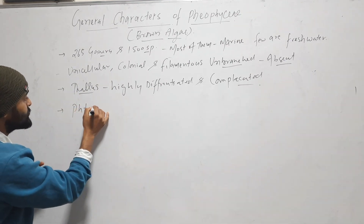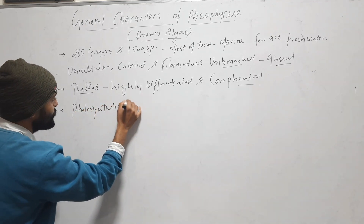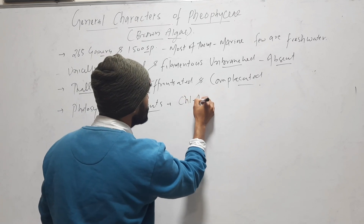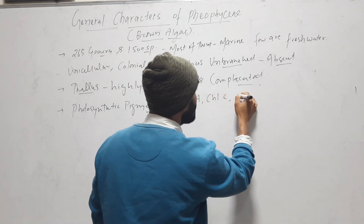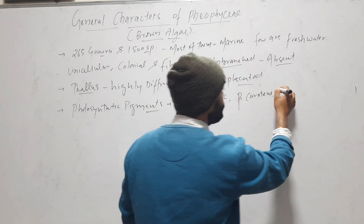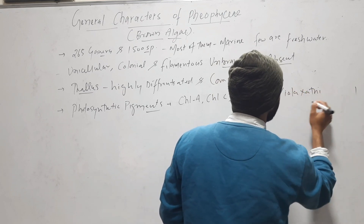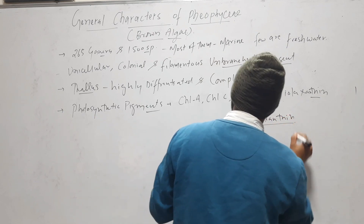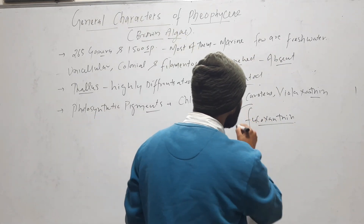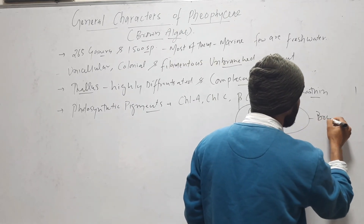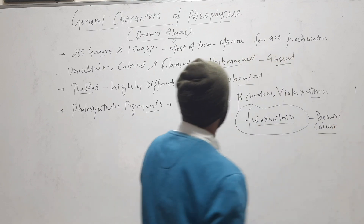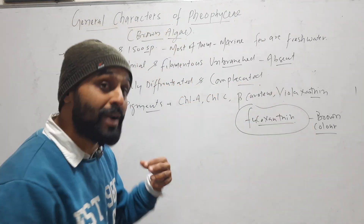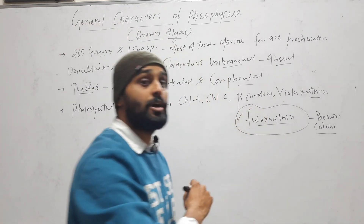When we talk about photosynthetic pigments, chlorophyll a, chlorophyll c, beta-carotene, violaxanthin, and fucoxanthin are found in Phaeophyceae. Fucoxanthin is very important — it gives brown color to the alga. So the brown color of Phaeophyceae is due to fucoxanthin, which is why it is called brown algae.